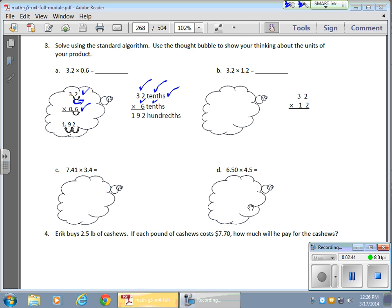And when we multiply, our 32 times 6 gives me my 192. And my tenths times my tenths is going to give me hundredths, because 10 times 10 gives me 100. So there's my hundredths place. And then all I have to do is account for the hundredths place with my decimal. And I'm looking pretty good.